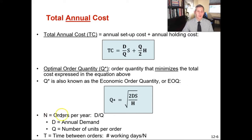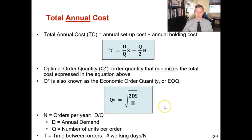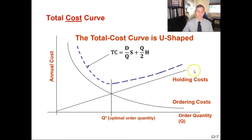The total cost curve is U-shaped. Holding costs are linear — they continue to go up as order quantity gets higher. Ordering costs are nonlinear — they go down as you order more because you're placing fewer orders. Where holding costs and ordering costs intersect is your economic order quantity. In examples I've worked through, we determined it made more sense to place more, smaller orders because our holding costs were more expensive than ordering costs, given the high cost of our products.